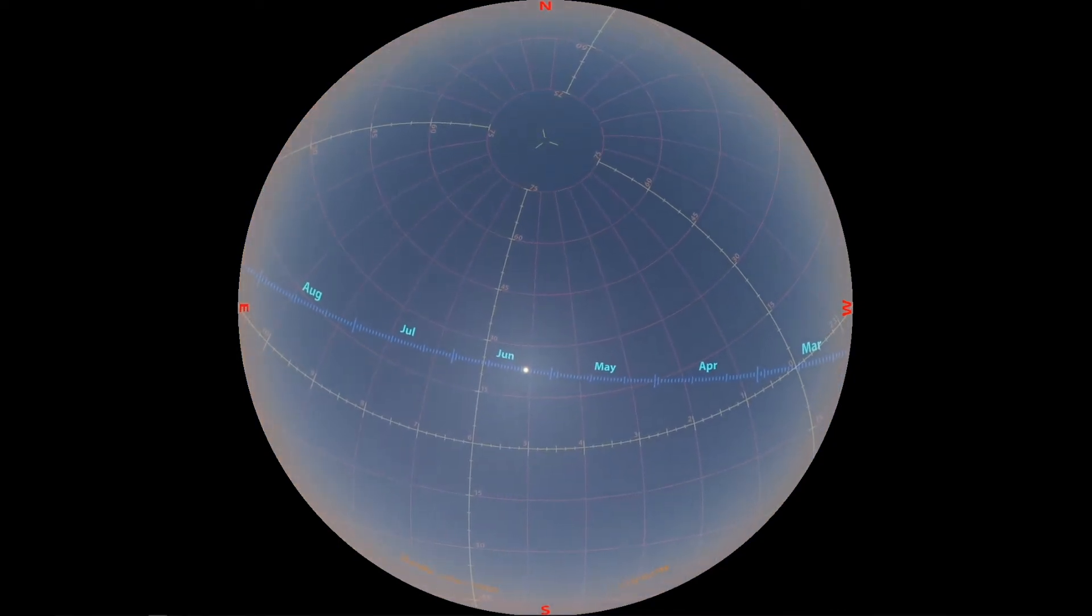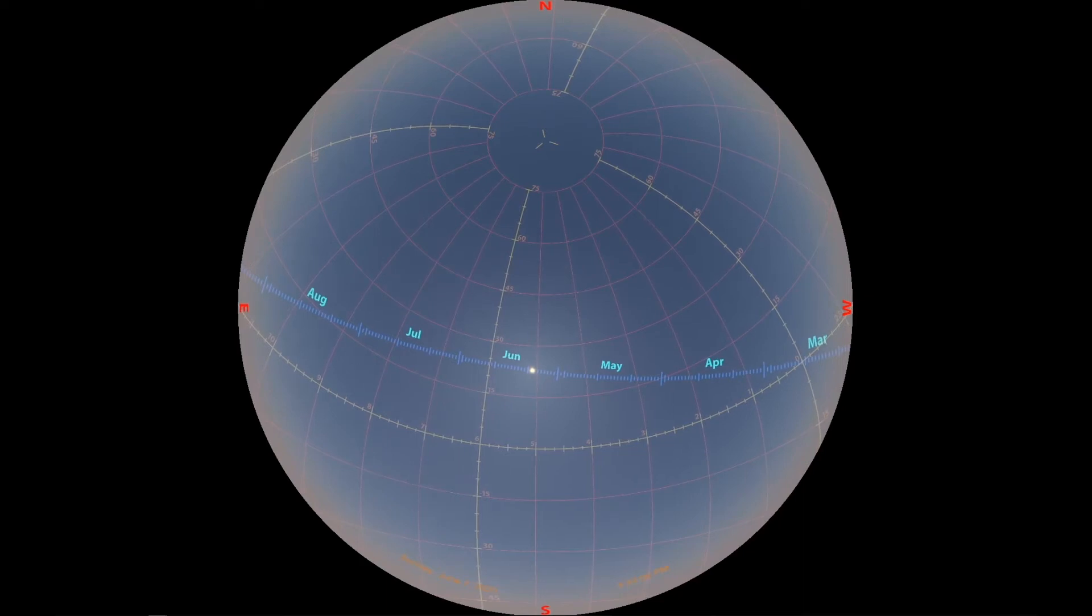In addition to this motion though, the Sun has a second motion, an annual motion, a very slow motion over the course of the year across the background stars to the east.